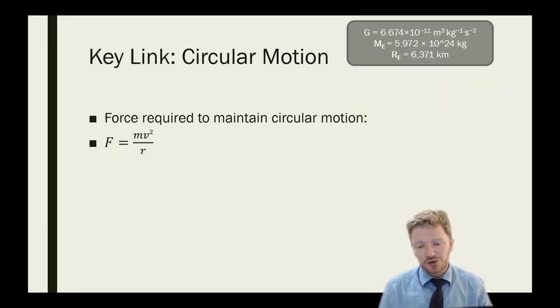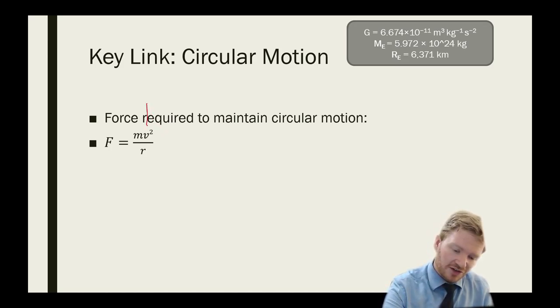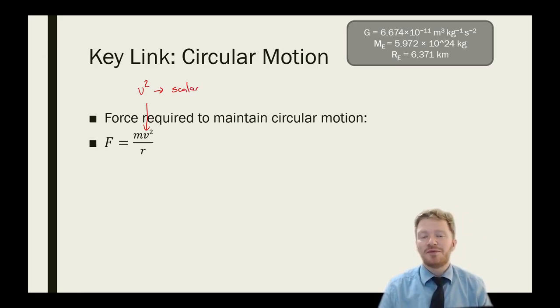There's a key link to this topic, and that is from circular motion. You know from GCSE, you might remember anyway, that the force required to make something travel with circular motion is equal to the object's mass times its velocity squared divided by its radius. Now you might say, hang on, velocity squared, I thought you just said that velocity is constantly changing. Remember, V squared, that makes it a scalar. If I square something, then I lose the directional component of it, which is quite cool.